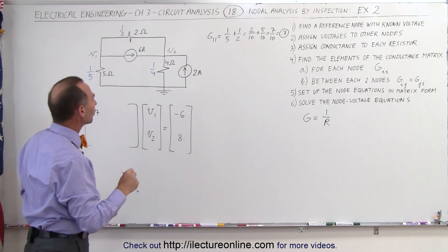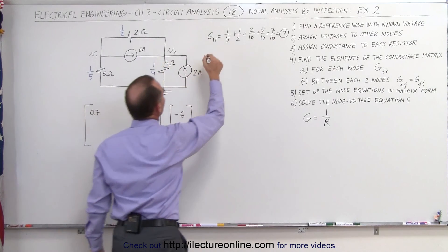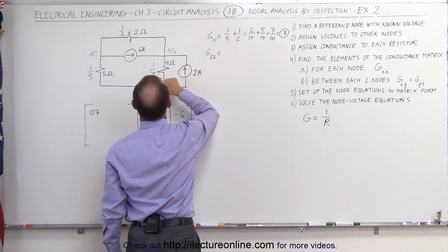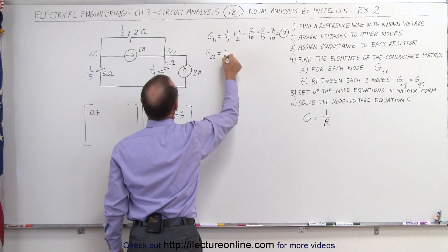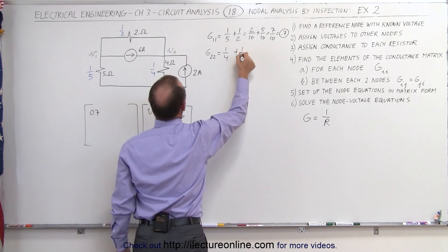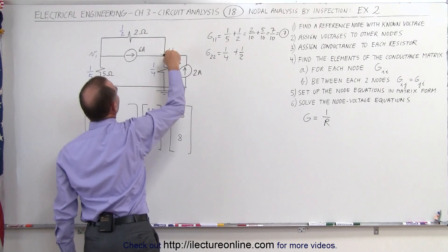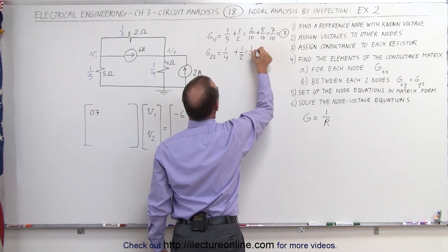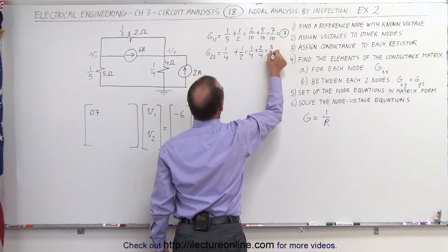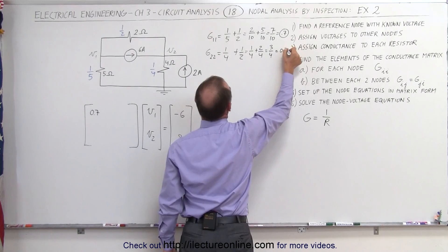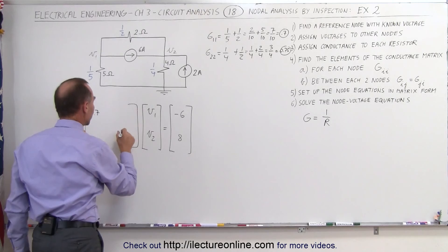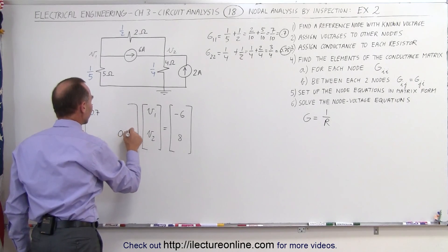Now we find all the conductances directly connected to node 2. That becomes G22: we have 1 over 4 and 1 over 2 connected there. The common denominator is 4, so 1 over 4 plus 2 over 4 equals 3 over 4, which is 0.75. That is the element G22.